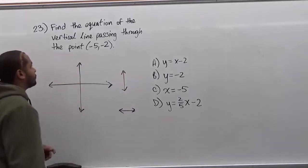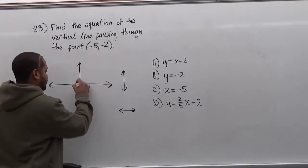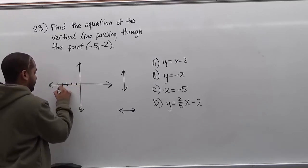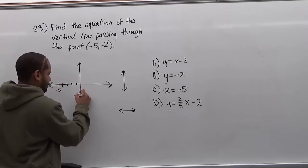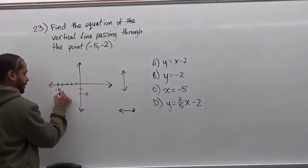So we want to draw a vertical line going through the point negative 5, negative 2. Let's find this coordinate first. 2, 3, 4, 5, this is negative 5, and here we have negative 1, negative 2 is down here, so the coordinate itself is specifically right here.